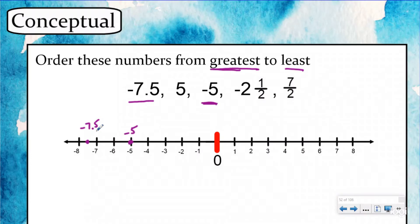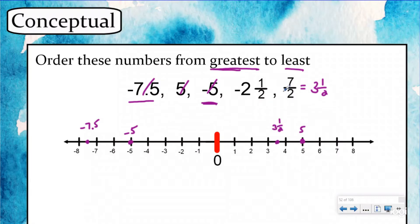Let's finish labeling all the numbers. I have positive five, and I have seven halves — I need to turn that into a mixed number. Seven halves equals three and one half, so I count over three and then another one half. Then negative two and one half: I count two units to the left because of the negative sign, then another half to the left. Now looking for the greatest to least, the furthest to the right is five, so five is the biggest.